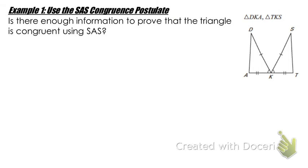So now looking at this specific example, are we going to be able to prove that these two triangles, DKA and TKS, are actually congruent to one another? The example is keying us to let us know that we have to use side angle side, so it's just letting us practice recognizing if we have enough evidence to say that the two triangles are in fact congruent. Triangle DKA is right here, and triangle TKS is over here.